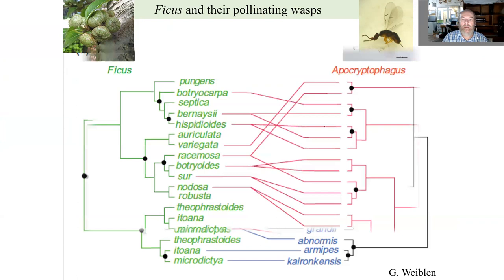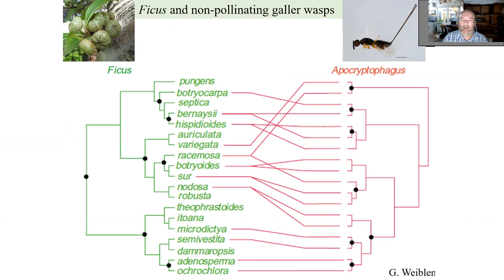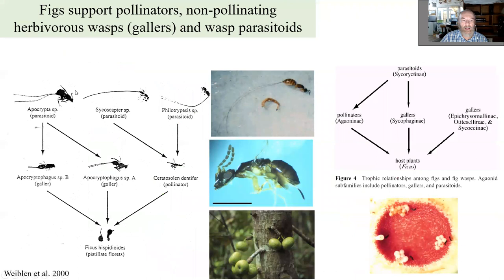His analysis of non-pollinating wasps shows that co-speciation is no longer the majority model for them — there is a lot of host switching. There are also more species of non-pollinating wasps per host.